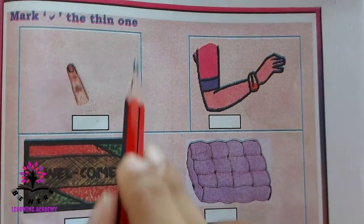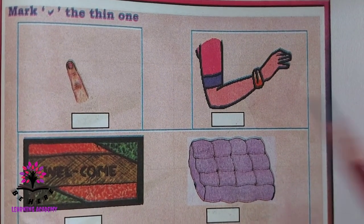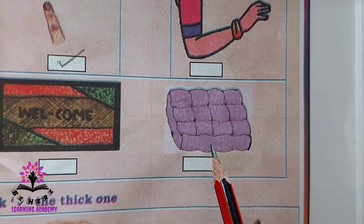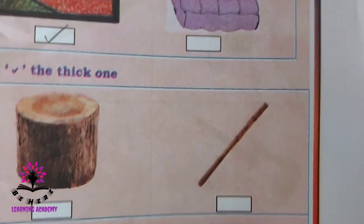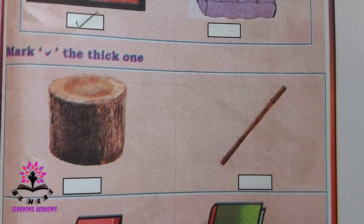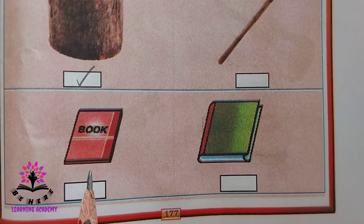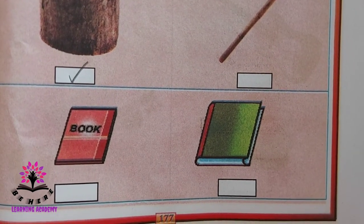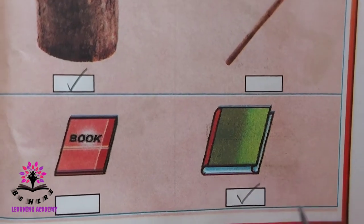Mark the thin one: a finger or a hand — the finger is thin. A doormat or a bed — the doormat is thinner. Mark the thick one: a stick or a wooden piece — the wooden piece is thick. Look at the thickness of both books. Which is thicker — the red book or the green book? The green book is thicker.